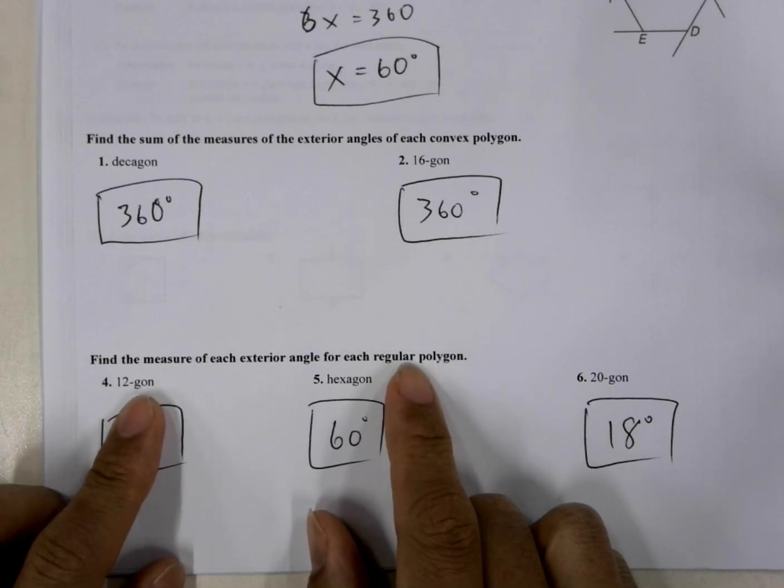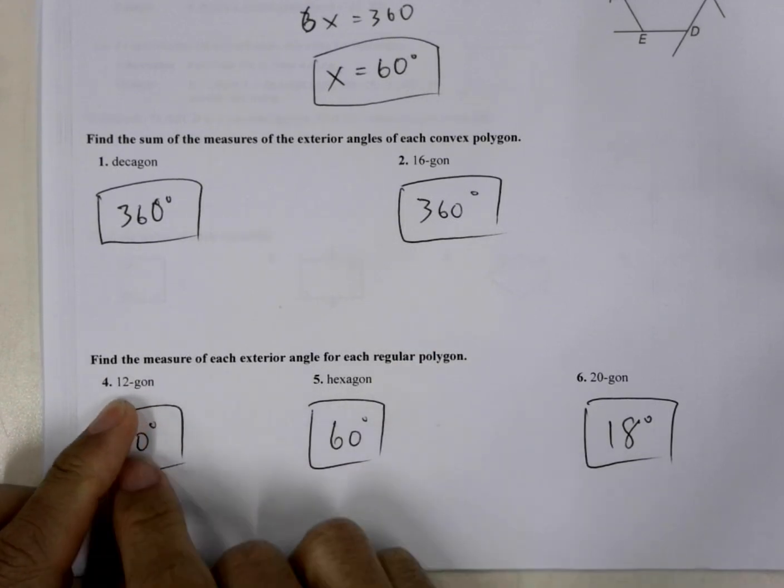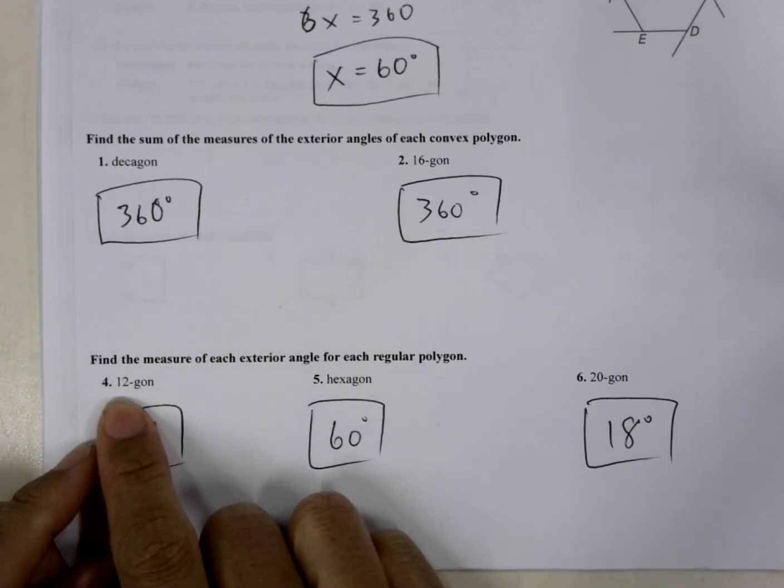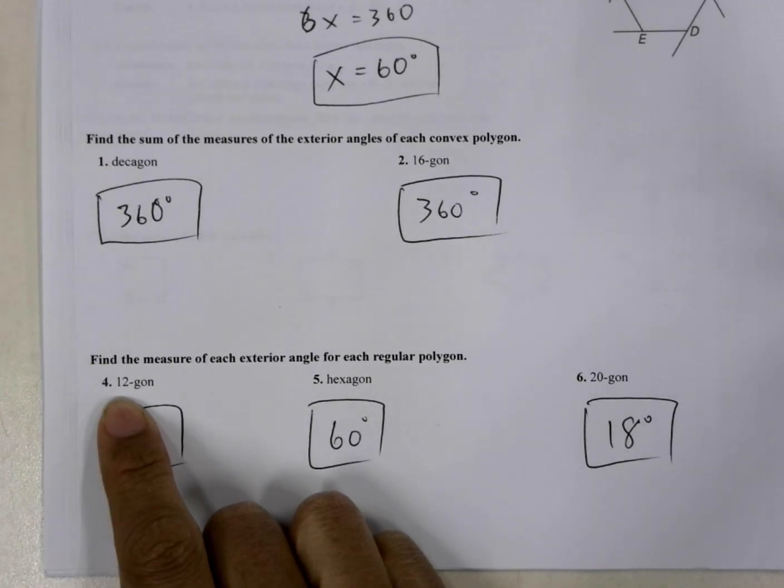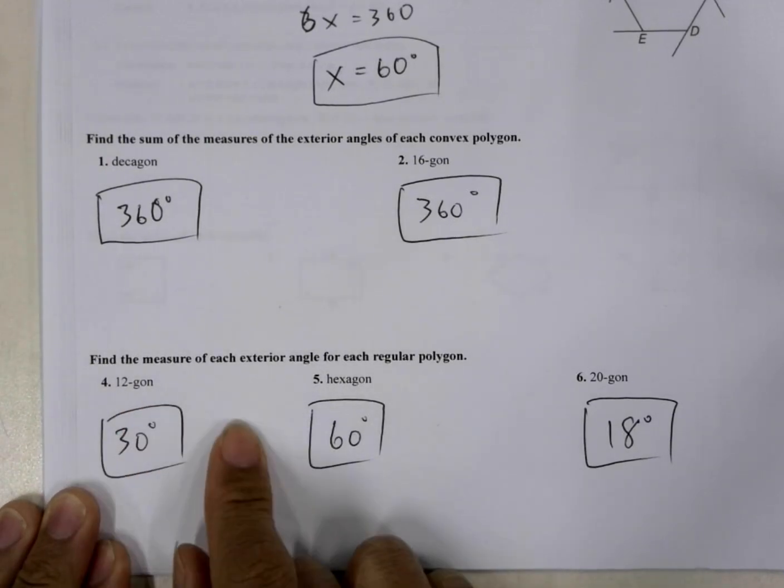So since the measure of all the exterior angles are the same, to add them all up, we would do x. We let x be the measure of each exterior angle. It would be 12x is equal to 360, would be the equation that we can create.